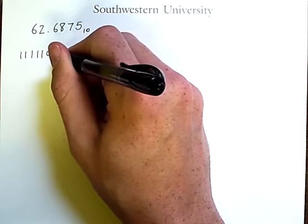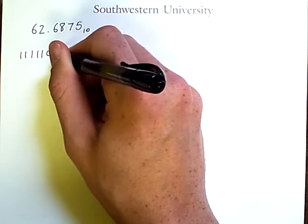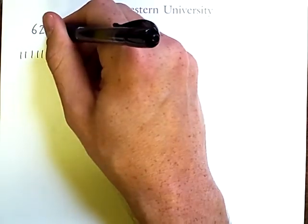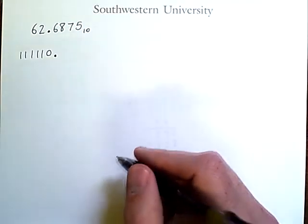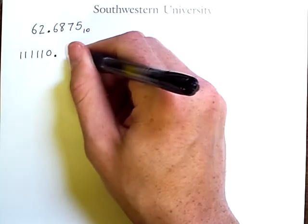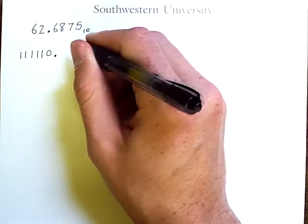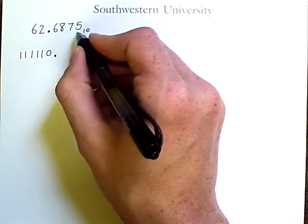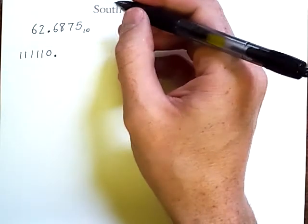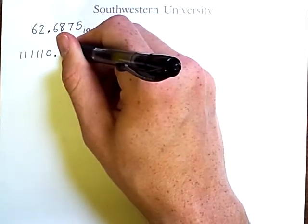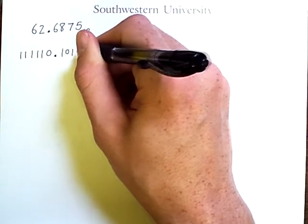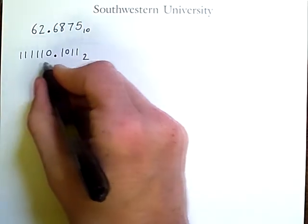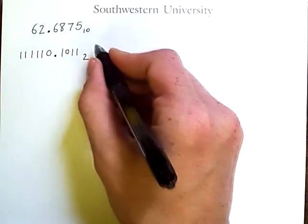However, what comes after what we will call here a binary point in contrast to this decimal point? Well, we need some sequence of binary digits that represents the fraction 0.6875. Turns out that the digits that do that are 1011.